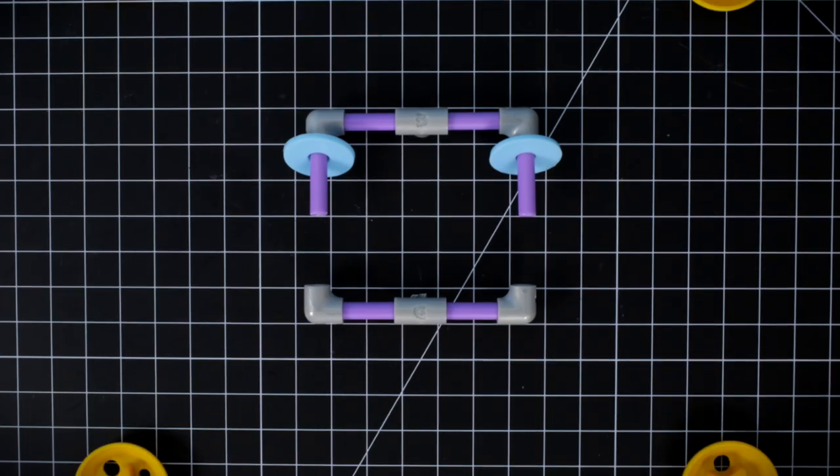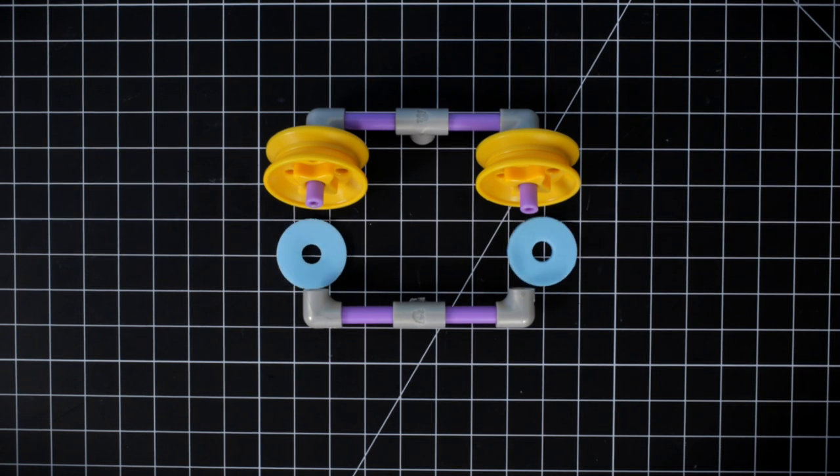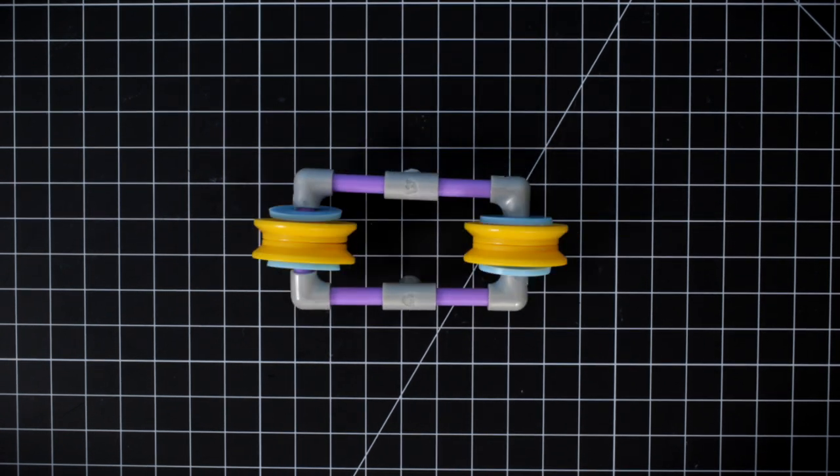Step 3. Snap two wheel ends together. Find two more washers and assemble all the pieces. Look at that! You've created a pulley!